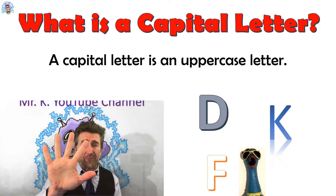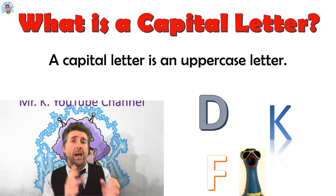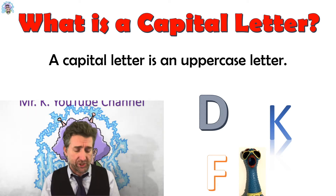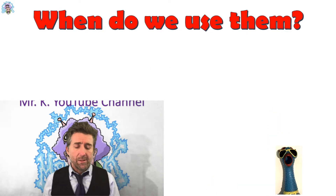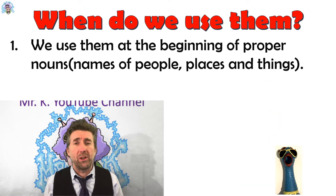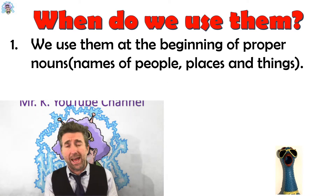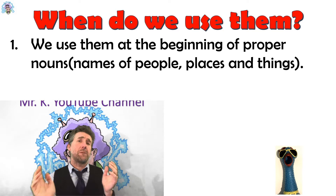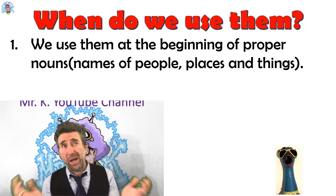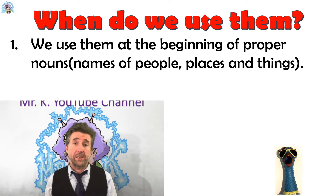Now, there are five different times that we would use a capital letter in English. Let's start with number one. The first time that you'd use a capital letter would be at the start of a proper noun. A proper noun is a name of a person, place, pet, or thing.